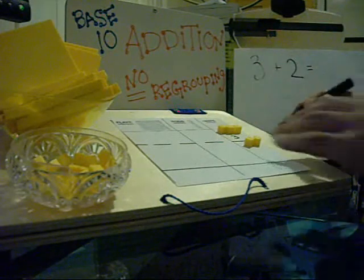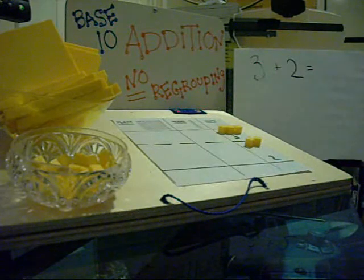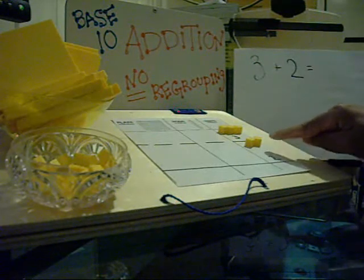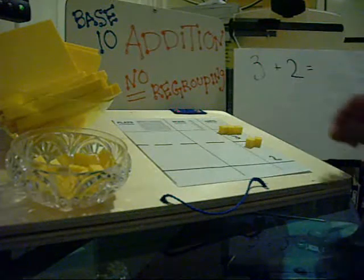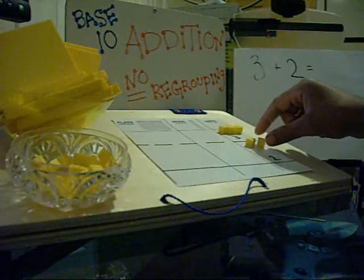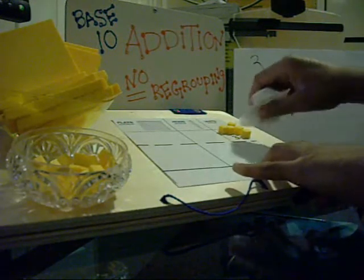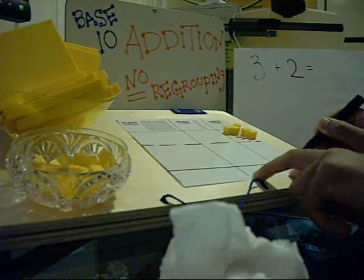Then our second number is the number 2. We're going to take 2 units. Number 2. And now what we're going to do is we're going to add these together. And how we add this together is we take all the units from the bottom, or whatever we're adding from the bottom, we bring it to the top. So we have 3 on top. We're going to bring everything from the bottom to the top. So 4, 5. What we'll do is we'll erase this over here. We already know that that's not the number. And we'll put 5 down here. So 3 plus 2 equals 5.